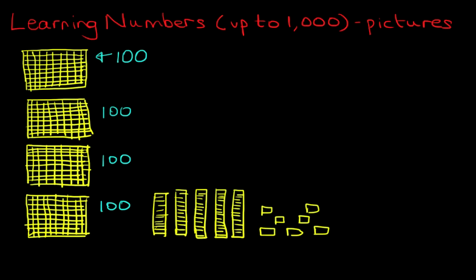Now how much does that make in total? How many 100 blocks are there? Well, there's 1, 2, 3, 4. There are 4 blocks. We can actually say there are 400. So that is the 100 blocks.